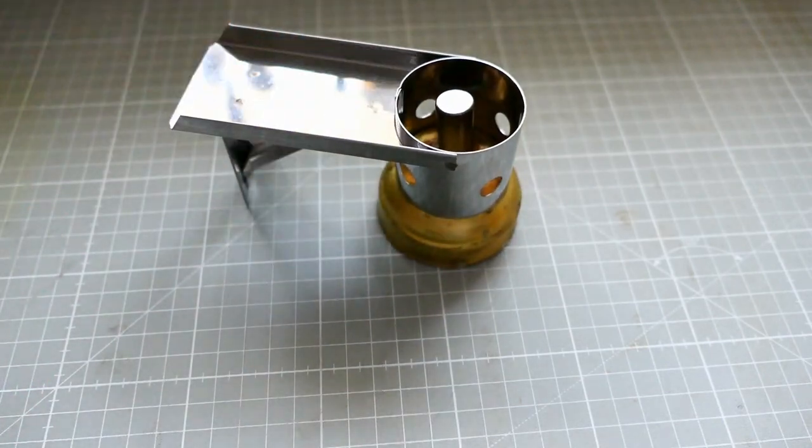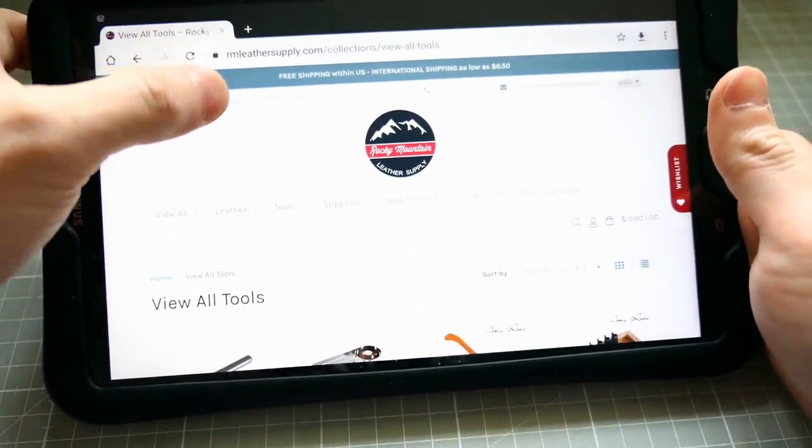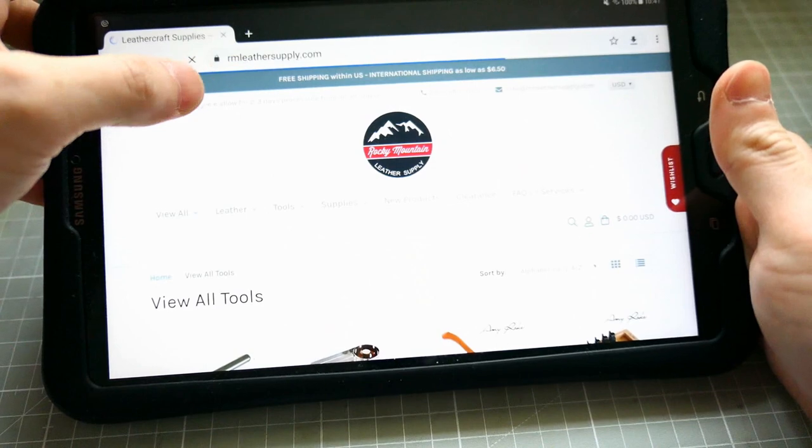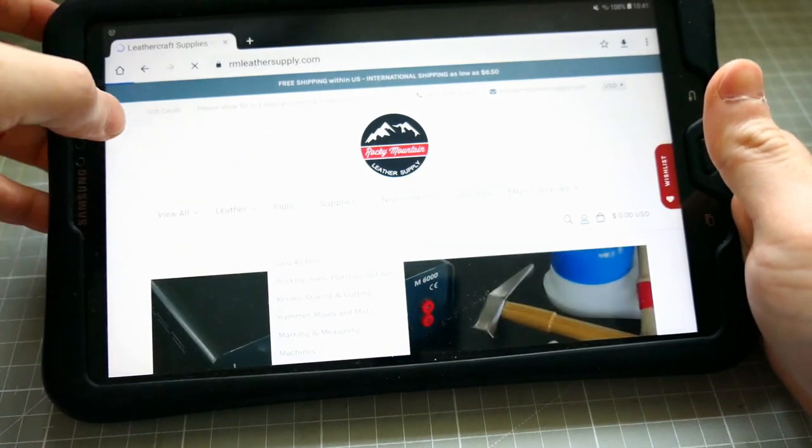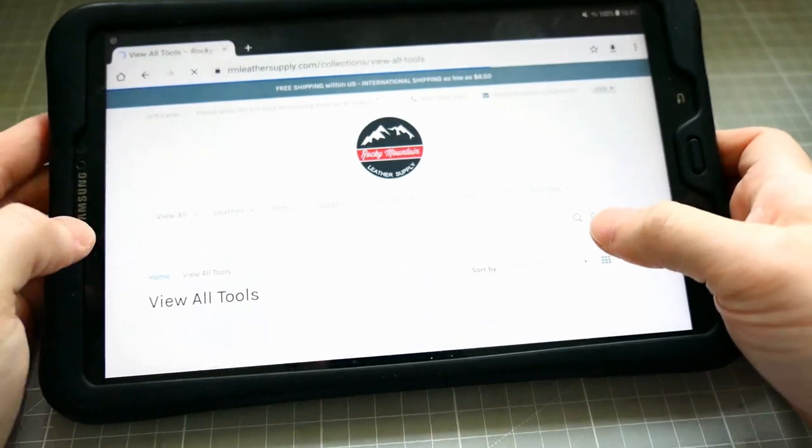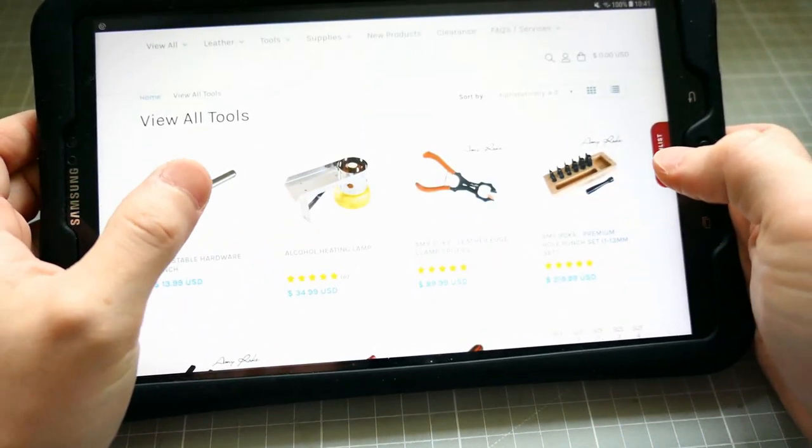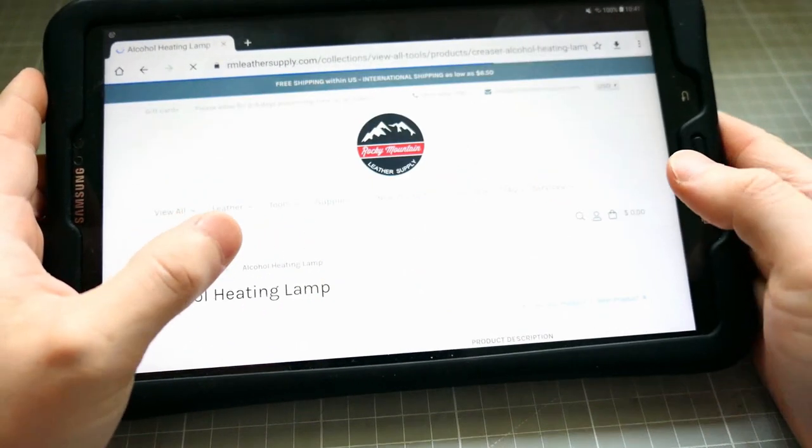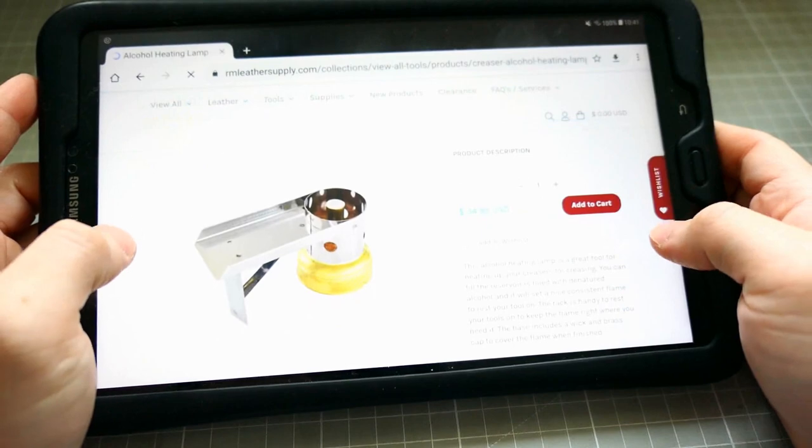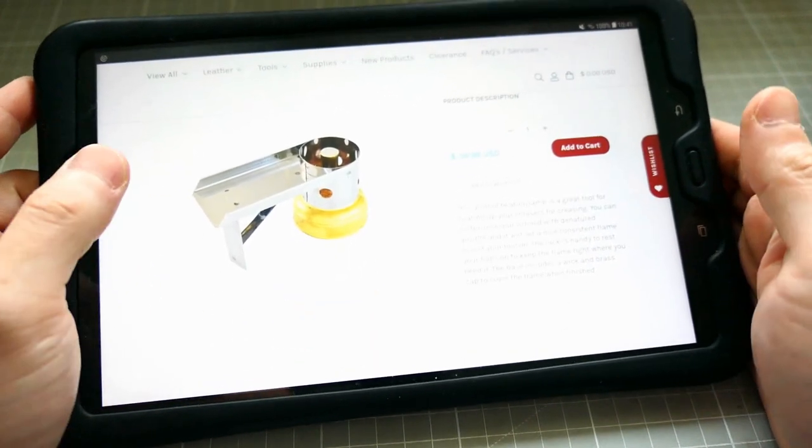Before I talk about the details, I'd like to show you where you can purchase this. This is Rocky Mountain Metal Supply. If you go to their main website and view all tools, it says the name: the alcohol heating lamp. They ship worldwide, they have great service, and you can buy it from here.